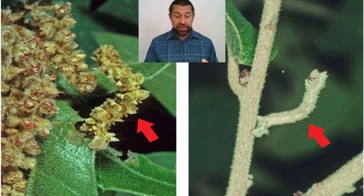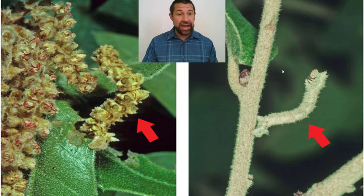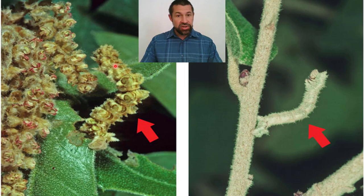Larvae born in the spring develop into caterpillars that look just like oak catkins — the male flowers that are on oak trees. These caterpillars are rich in yellow color with all of these small projections, and you can see that they're matching the oak catkins.